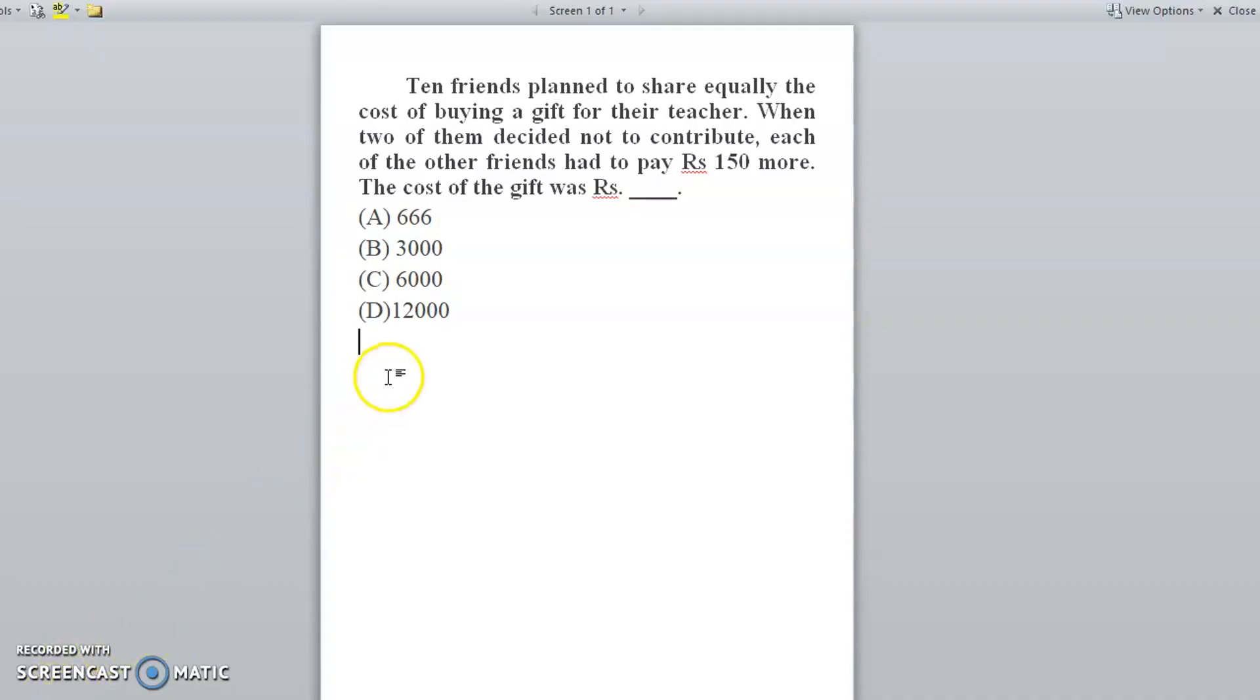Now assume the amount is equal to x. So what is the average for 10 people? That is x by 10. When it is divided by 8 people, that is x by 8, we have to pay additional 150 rupees. So when you divide by x by 8, we have to pay 150 rupees additionally. This is the statement we assumed, where x is equal to the amount of the gift.